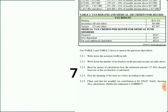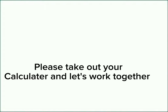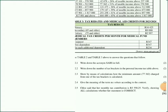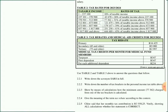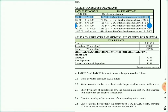Now for question 2.2.3: show by means of calculation how the minimum amount of R77,362 from one of the tax brackets is calculated. We have to prove how we can get this amount — the minimum amount. So let's focus on these specific numbers here.